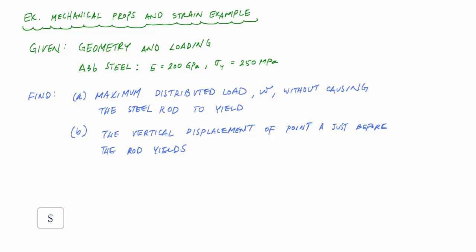And in this video, we're going to do an example problem that involves some basic mechanical properties and strain information for this beam that's supported by a steel rod and a pin support. That rod is made of A36 steel, which has a modulus of elasticity of 200 gigapascals and a yield strength of 250 megapascals.